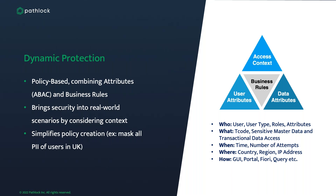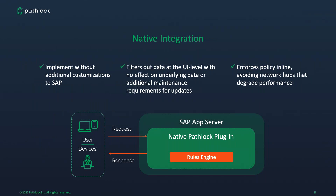The scenario attributes include: access context — how are they coming in, where are they coming in from, what time of day; data attributes — what data are they working with, is it private data or financial data; and user attributes — what type of user are they. Having a dynamic system means you can have a policy that says 'mask all PII of users in the UK' for GDPR. But you also need to understand what data they're working with — maybe they're working with data from outside the UK, so does that need to be masked? All of those things need to be understood, and then there's also native integration with the SAP solution.